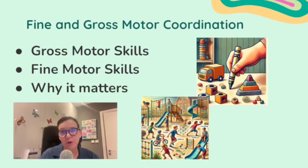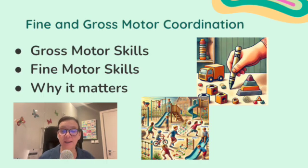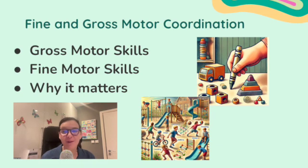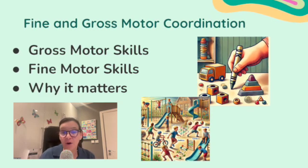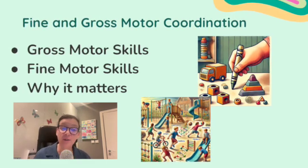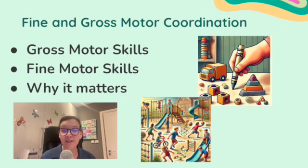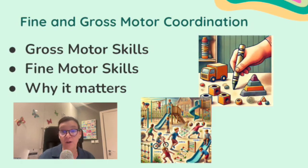Let's talk about fine and gross motor coordination — it's an essential part of physical development in children. These skills enable kids to interact with their environment and gain independence. Starting with gross motor skills: these involve larger movements that engage bigger muscle groups, for example walking, running, jumping, throwing, or catching a ball. Gross motor skills are essential for mobility and coordination, and allow kids to explore their environment. For example, a toddler learning to walk can now reach toys and explore the house, building confidence and curiosity.